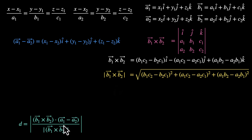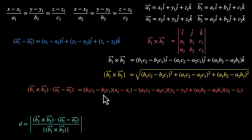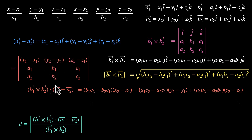Now we need the dot product of (B1 cross B2) with (A1 minus A2). That gives: (x1−x2)(b1·c2−b2·c1) + (y1−y2)(a1·c2−a2·c1) + (z1−z2)(a1·b2−a2·b1). If you look closely, this dot product can be written compactly as a determinant: the first row is (x2−x1, y2−y1, z2−z1), the second row is (a1, b1, c1), and the third row is (a2, b2, c2).